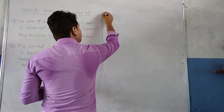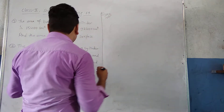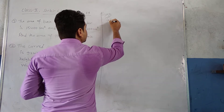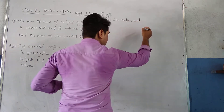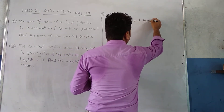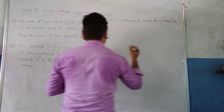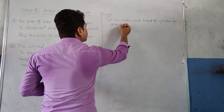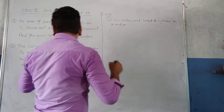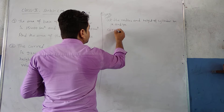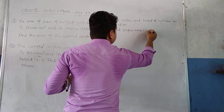Question number 2 solution. Since radius and height are in a ratio, we will let them be in terms of a variable. Let the radius and height of the cylinder be 3x and x respectively. Curved surface area is also given.